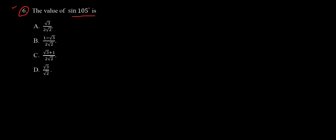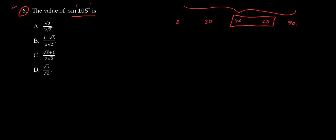Question 6 asks for the value of sine 105 degrees. We need to find the value of sin(105°). We have a table of values for 0, 30, 45, 60, and 90 degrees for all trigonometric functions, but there is no value given for 105. However, if we add 45 and 60 we get 105, so we can write sin(105°) as sin(45° + 60°).